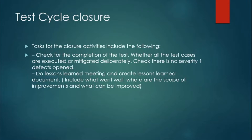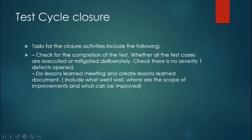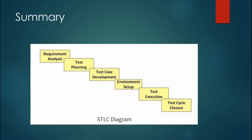The last phase is Test Cycle Closure. In this phase, we check for completion of testing — whether all test cases are executed and no high-severity or high-priority defects remain open. The QA team documents lessons learned, such as new things discovered from the Business Analyst or client during testing. This is recorded in a document called KCD — Knowledge Capture Document — which includes what went well, the scope of improvement, and what can be improved.